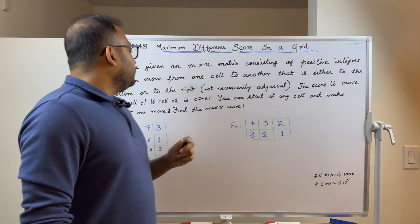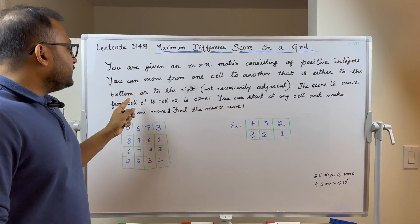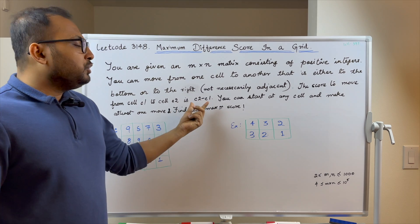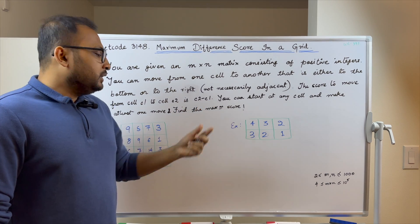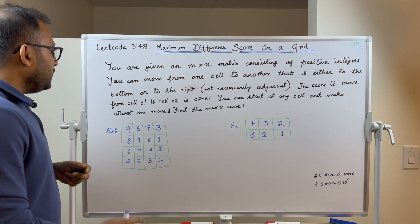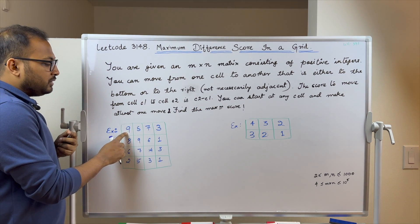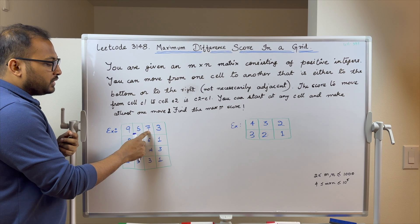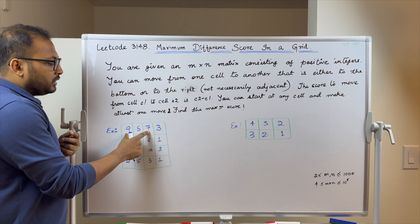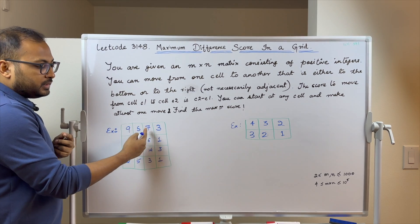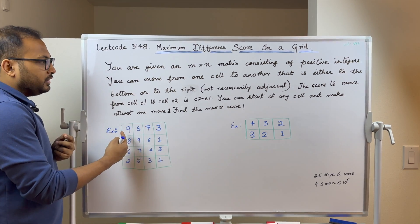The score to move from cell c1 to cell c2 is c2 minus c1. For example, if you jump from a cell with value 9 to a cell with value 7, the score is 7 minus 9.